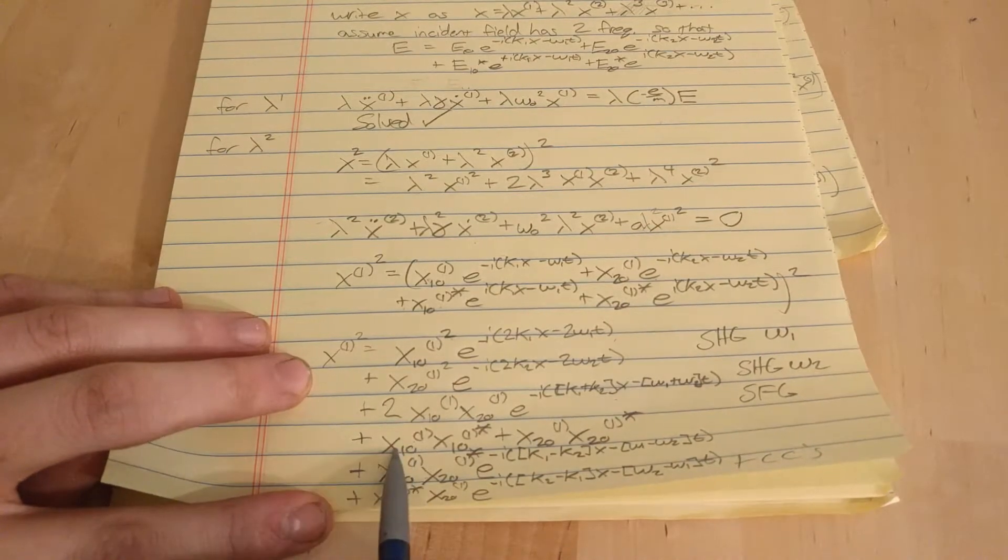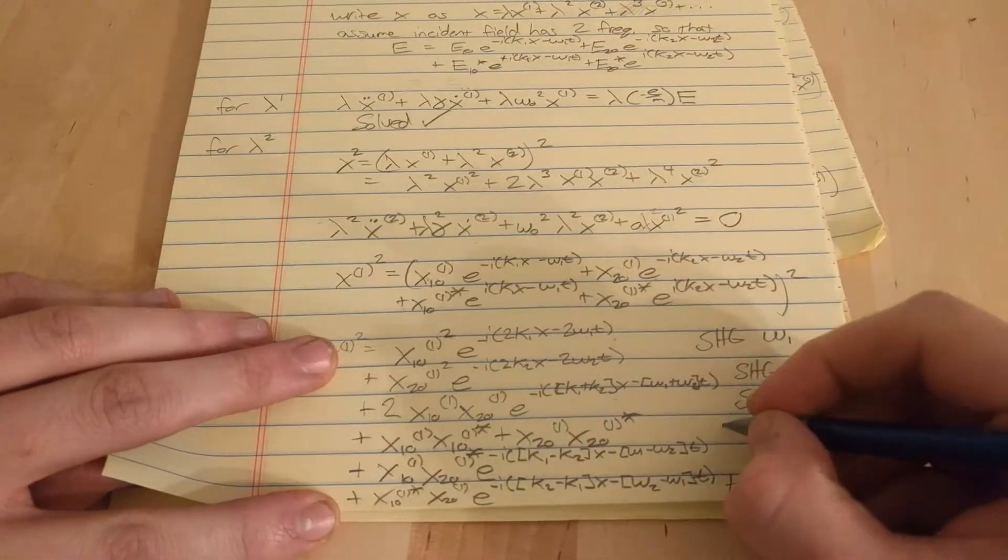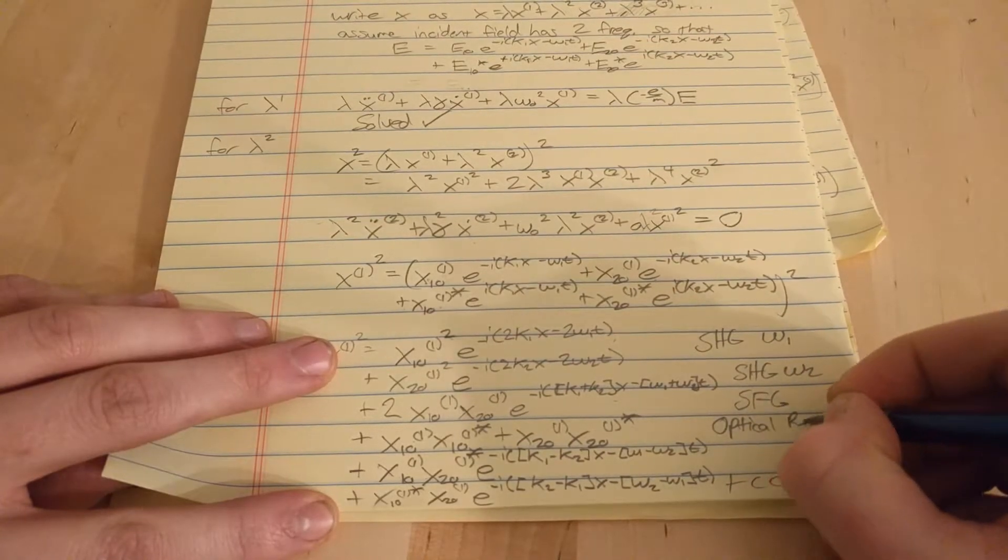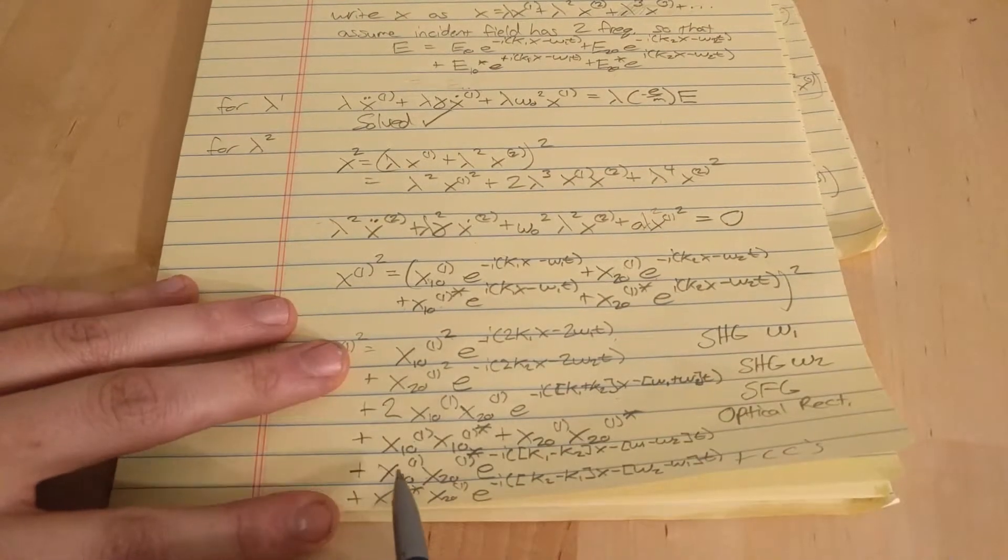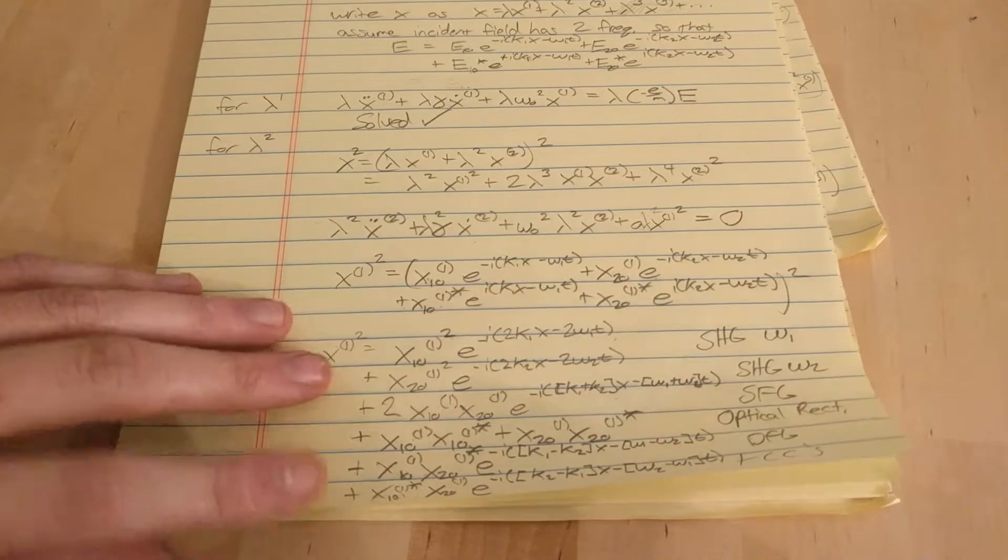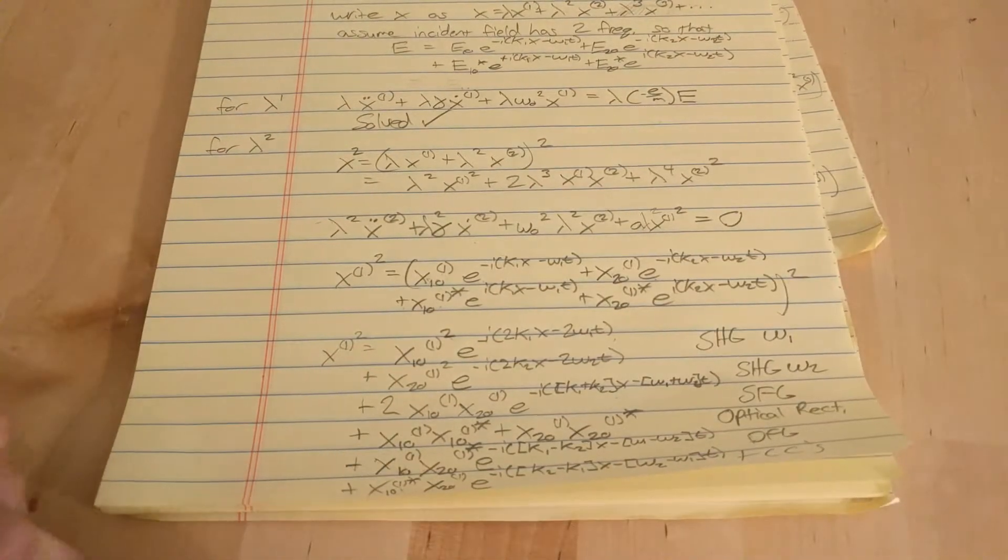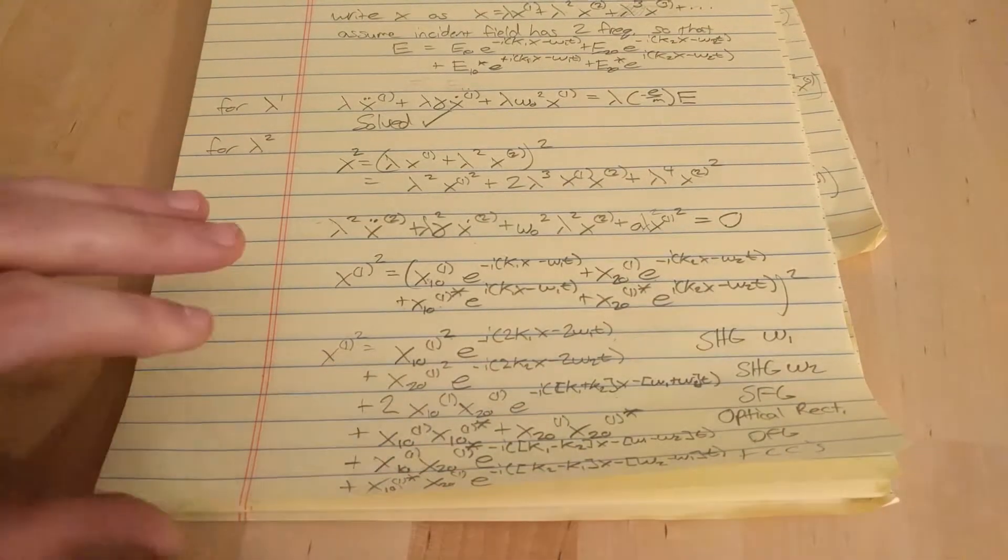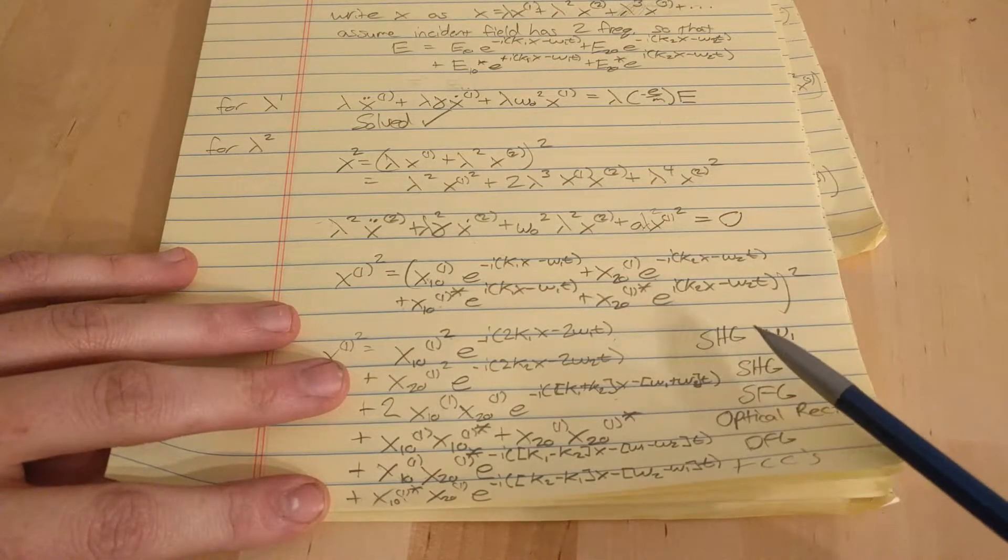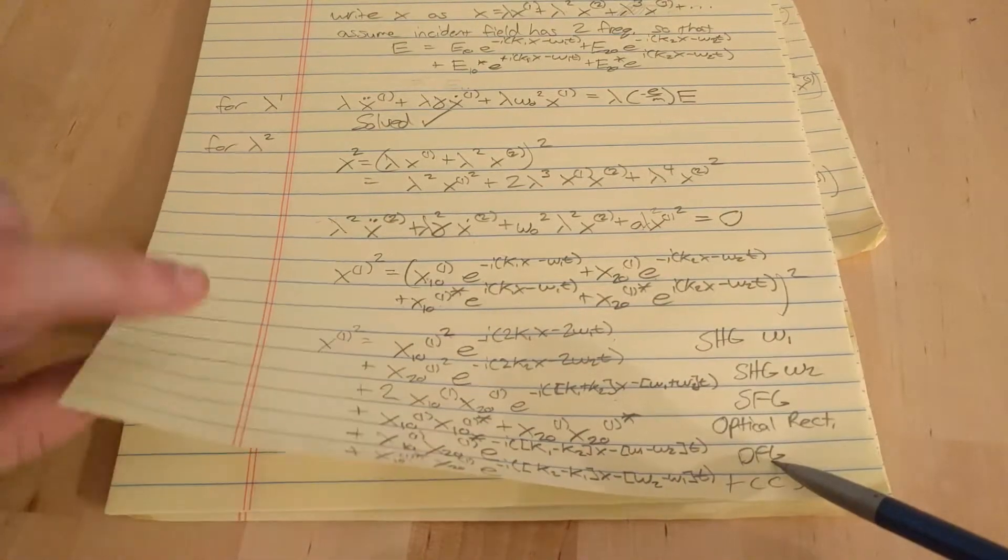This term here is pretty interesting because the exponents cancel, and this is called optical rectification. These last two terms are difference frequency generation. So there's five major types of second order nonlinear phenomena: second harmonic generation, sum frequency generation, optical rectification, and difference frequency generation—really only four types.